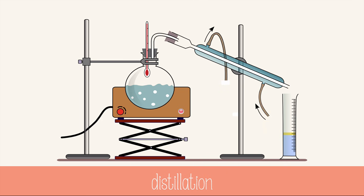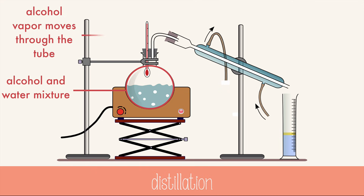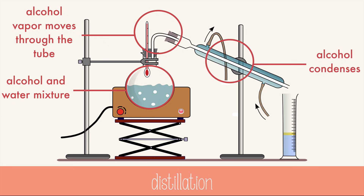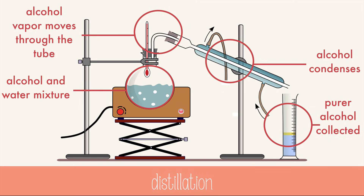Distillation is a process to separate two liquids where liquid is boiled to produce vapor, which is then condensed and collected. This is how alcohol is distilled to get a purer form. Alcohol boils at a lower temperature than water, so the mixture is heated so that the alcohol vaporizes but not the water. Then the alcohol condenses through a special condenser tube that keeps cool by running water through it, and the alcohol is collected at the end of the tube. Now you know one of the steps for making moonshine — not that you would ever do that.